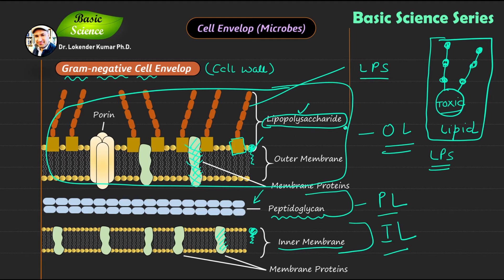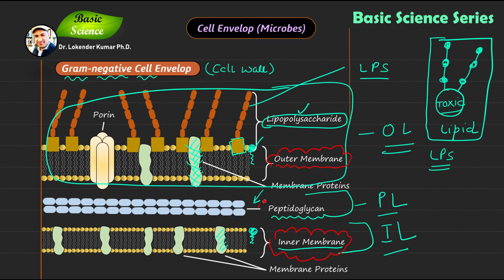Let me summarize everything again. The first component is the outer membrane, then you have the inner membrane, and then the peptidoglycan. These are the three important components of the gram-negative cell wall. Then you have membrane proteins — I am highlighting them. I also missed the porin proteins. Porin proteins are also present in the membrane and play an important role in exchanging molecules — molecules can go in and out through these porin channels, so they are really important for proper cell functioning.